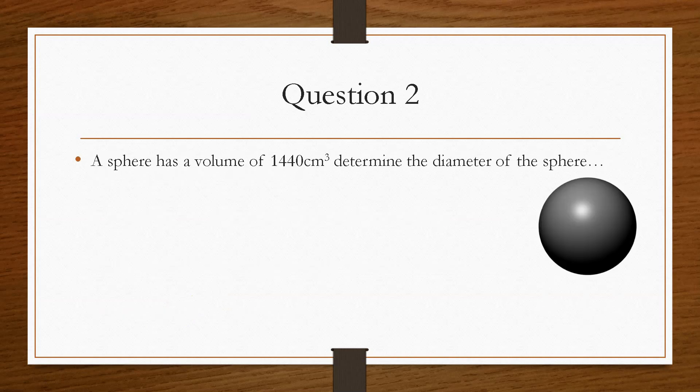So if we take a look at question number two, it says a sphere has a volume of 1,440 centimetres cubed. Determine the diameter of the sphere. So this one is working backwards. It's giving us the volume and asking us to find the radius. Now, the process is exactly the same regardless of the shape. So it could be a cone, it could be a pyramid. The process is the same. So the first thing we'll do is we'll write out the formula for the volume of a sphere. And this is V = 4/3πr³.